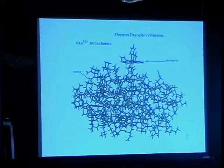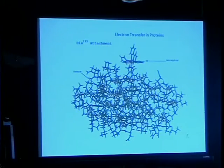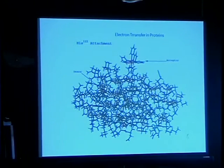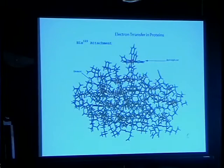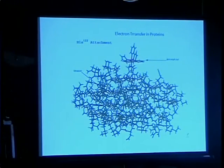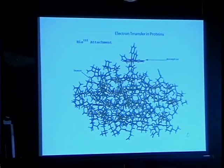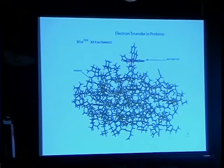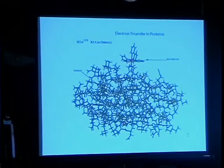This is an enzyme, and people have studied electron transfers in an enzyme. There are many, many things — this is far more complicated than just a pair of ions in solution — but it's an example of something in which the theory has been applied: the transfer of an electron from one precise site on this enzyme to another site.